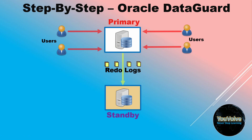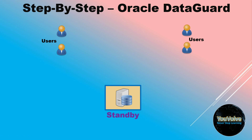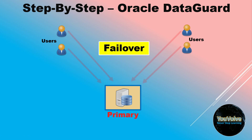For any reason, say the primary DB is down or destroyed and the users are no more able to connect, the standby DB will be converted and brought up as the new primary database — which is called a failover activity — and users will start connecting to the new primary database, which was a standby database before, to continue their work.